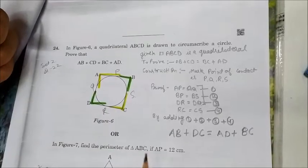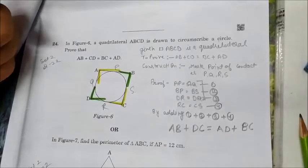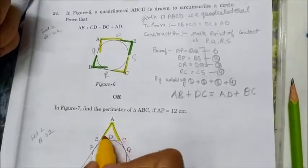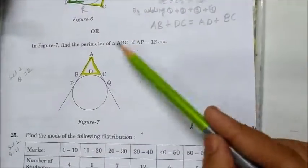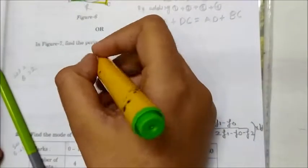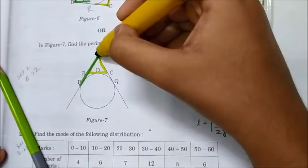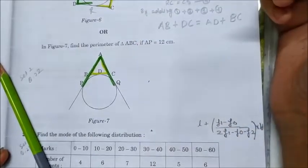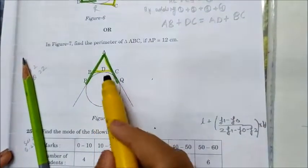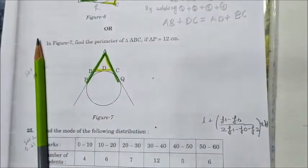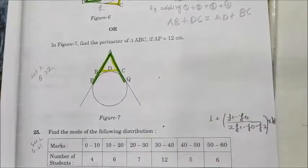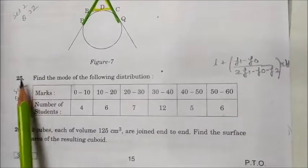The next part: In figure 7, find the perimeter of triangle ABC if AP = 12 cm. We know AP = AQ since they are both tangents to the circle from point A. Using the tangent properties we can find the remaining sides and then calculate the perimeter of the triangle.